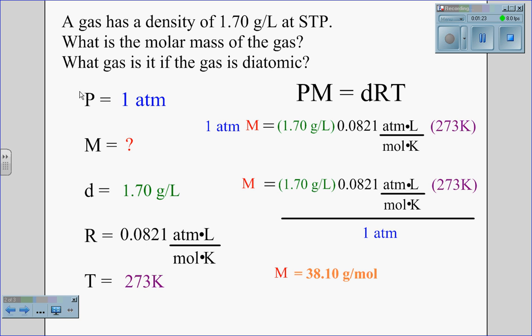We identify our knowns and unknowns. Our pressure is 1 atmosphere because the gas is at STP, standard temperature and pressure. Standard pressure is always 1 atmosphere.